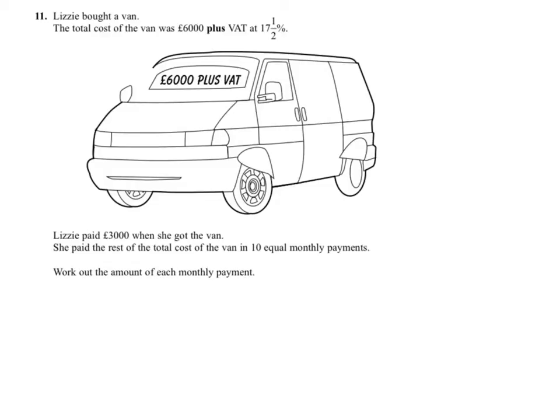Question 11. Lizzie bought a van which costs £6,000 plus VAT. She paid a deposit of £3,000 and the rest of the money has been paid in 10 equal monthly payments. That's what we're looking to work out.